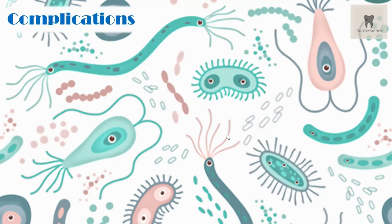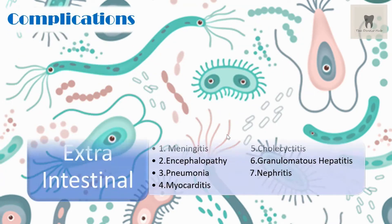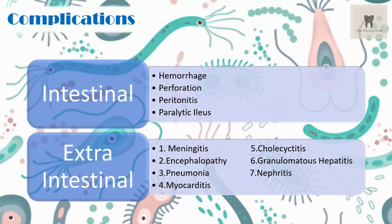The complications of typhoid are classified as intestinal and extra-intestinal. Intestinal complications include hemorrhage, perforation, peritonitis, and paralytic ileus. Extra-intestinal complications include meningitis, encephalopathy, and pneumonia.